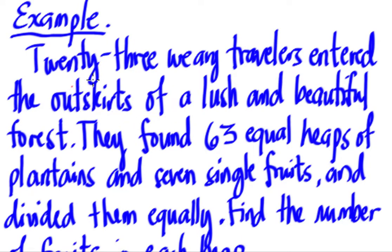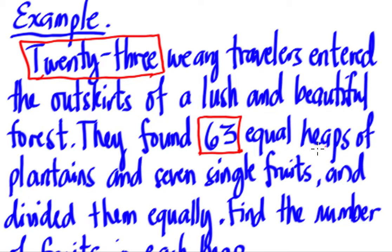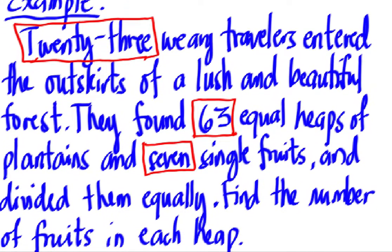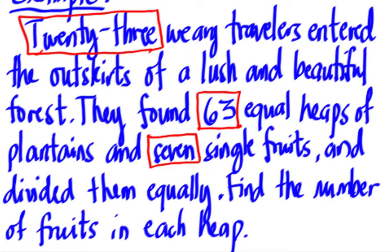So we have 23 weary travelers entered the outskirts of a lush and beautiful forest. They found 63 equal heaps of plantains. So we have the number 23. We have number 63. Let's highlight them. And seven single fruits. So let's highlight that. Seven single fruits. And divided them equally. We will have to find the number of fruits in each heap. Again, there are 23 weary travelers entered the outskirts of a lush and beautiful forest. They found 63 equal heaps of plantains and seven single fruits. And divided them equally to each of them. So they're 23. Find the number of fruits in each heap.